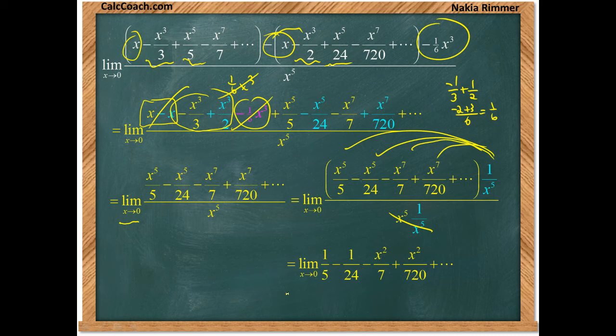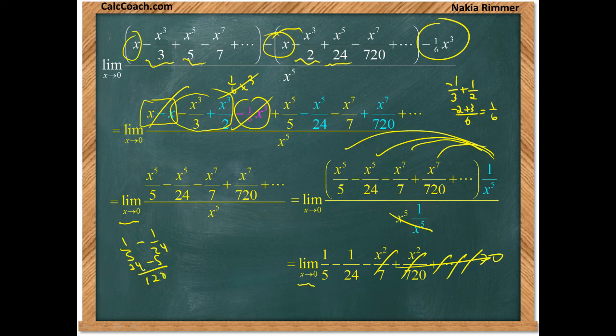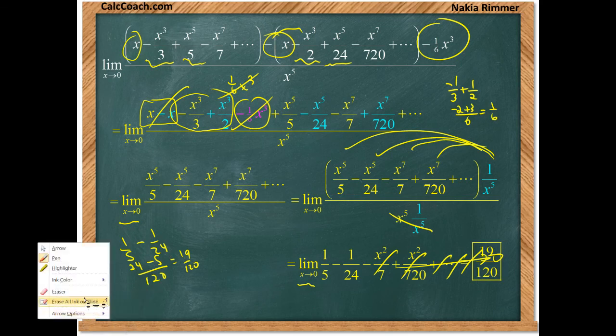But remember, x is going towards zero, and so these terms and all the higher-ordered terms will head off towards zero. You're left with just these first few. We have to take a fifth and subtract the twenty-fourth. Twenty-four times five would be the common denominator. You have twenty-four of them, we take away five of them. That's a hundred and twenty, and we end up with nineteen of them. And that's our answer to the question: nineteen over one hundred and twenty.